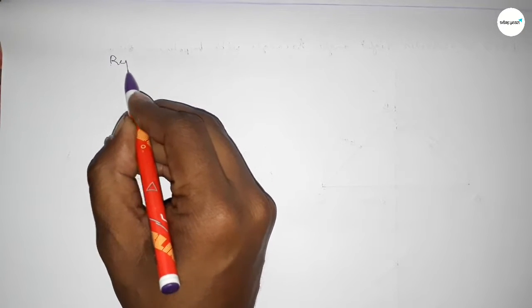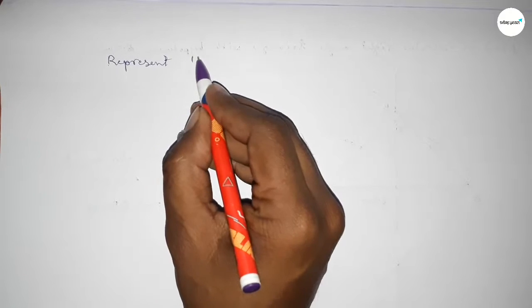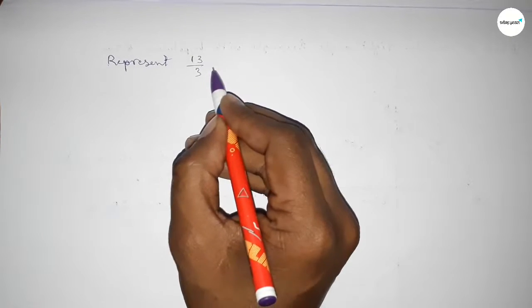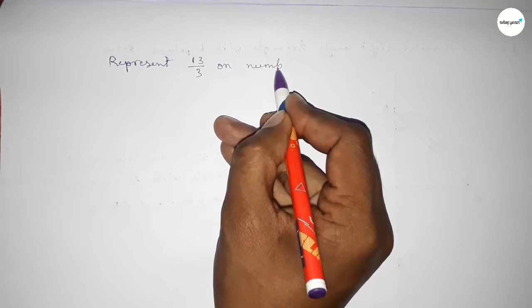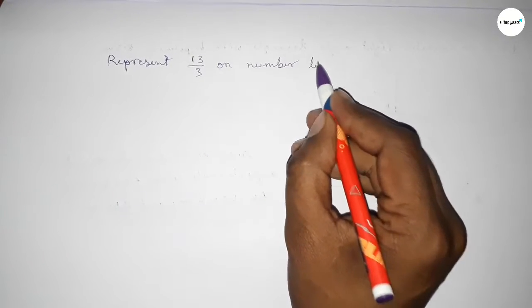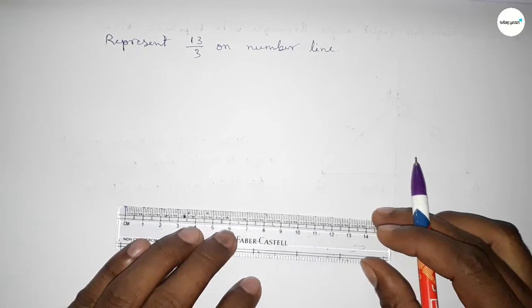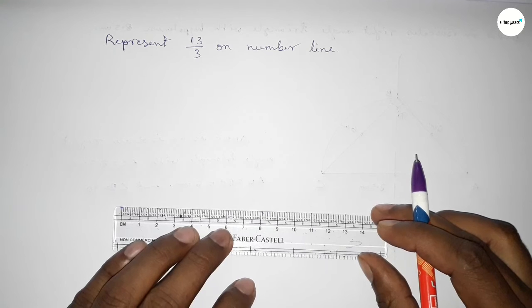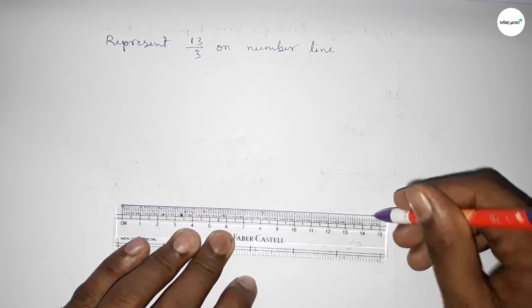Hi everyone, welcome to SI Share Classes. Today in this video we have to represent 13 over 3 on a number line. So let's start the video. First of all, we have to draw here the number line.